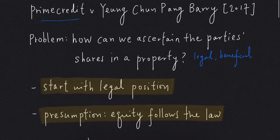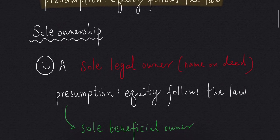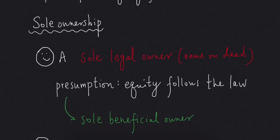The problem we have here is how we can ascertain the parties' shares in the property. We always start with the legal position. For the position in equity, the presumption of equity follows the law applies. So let's look at the sole ownership context. Let's say we have A, who is the sole legal owner of a property. For the position in equity, the presumption of equity follows the law applies, so A is also the sole beneficial owner.